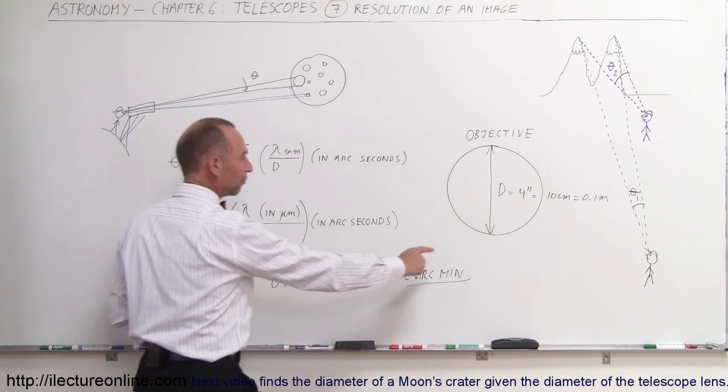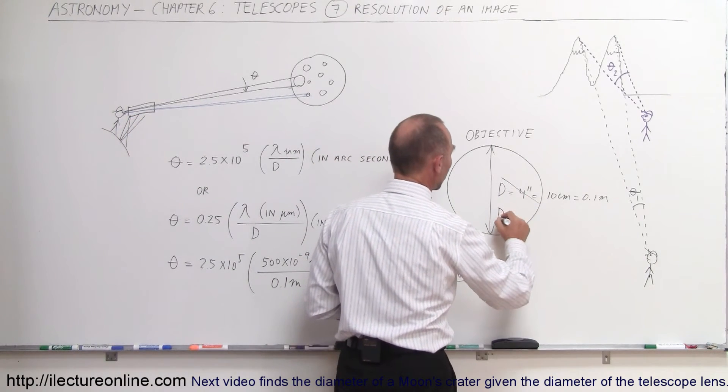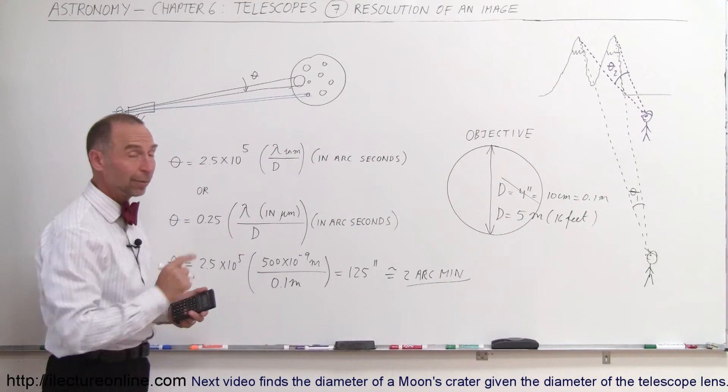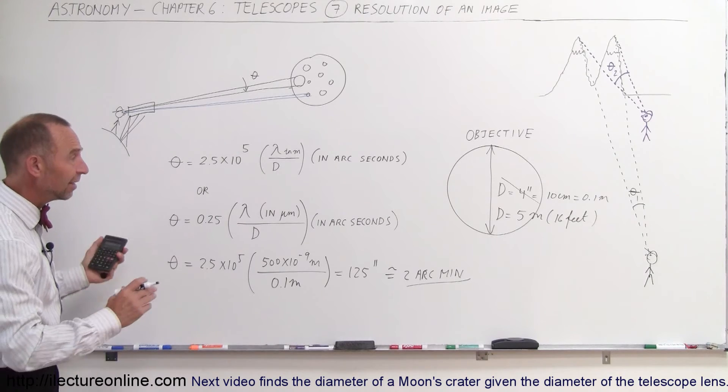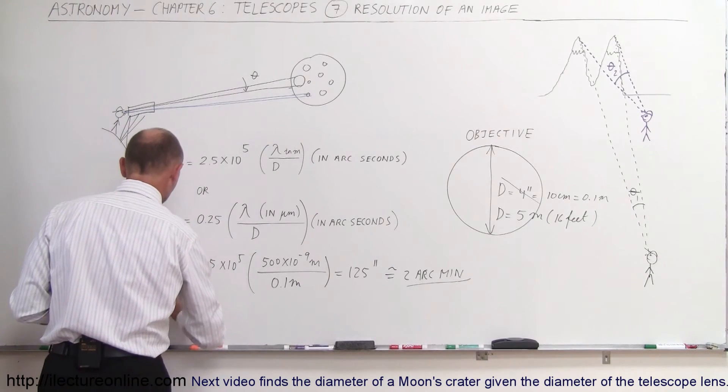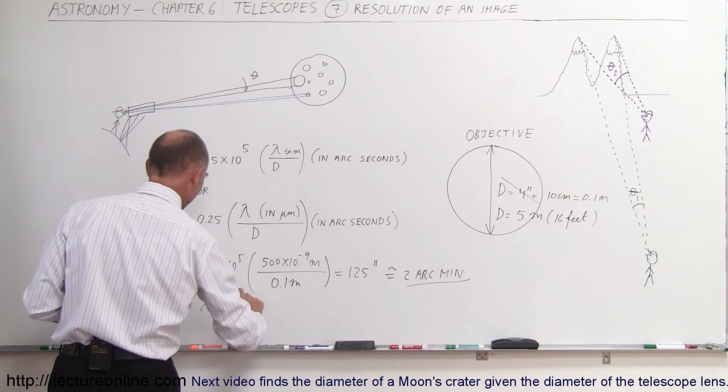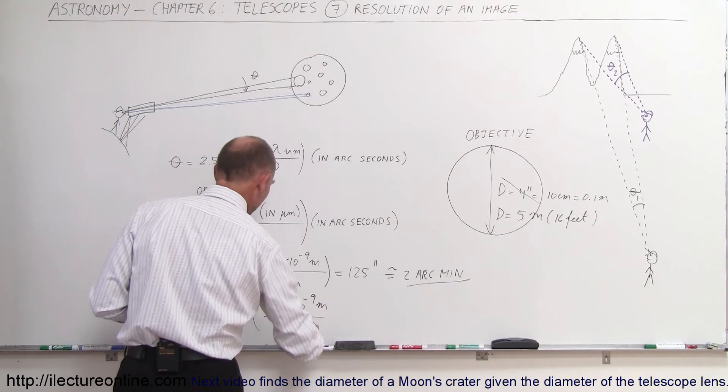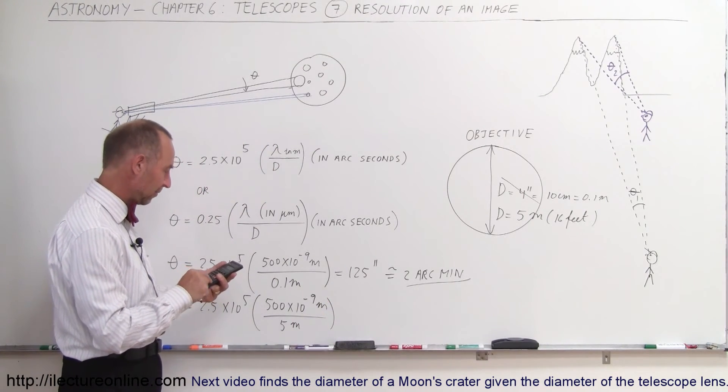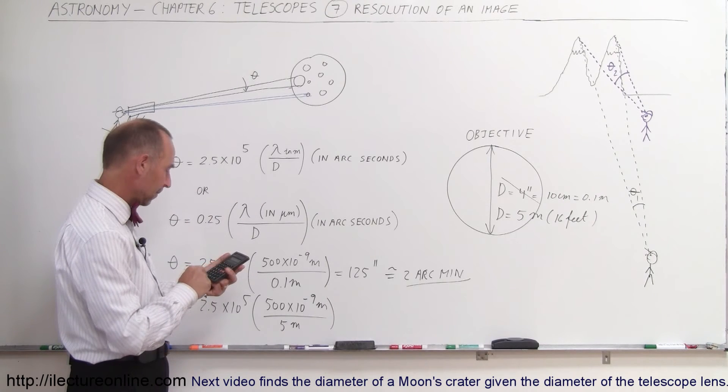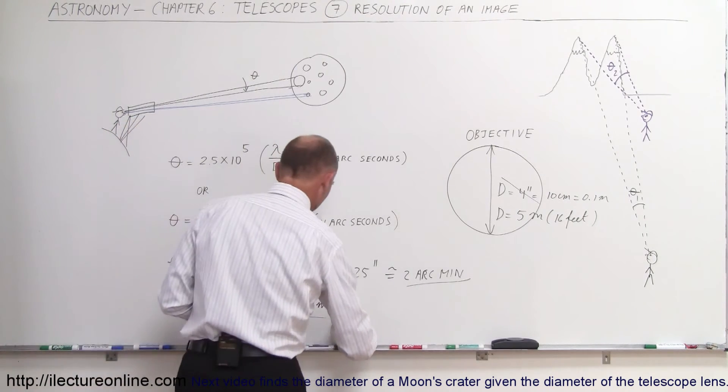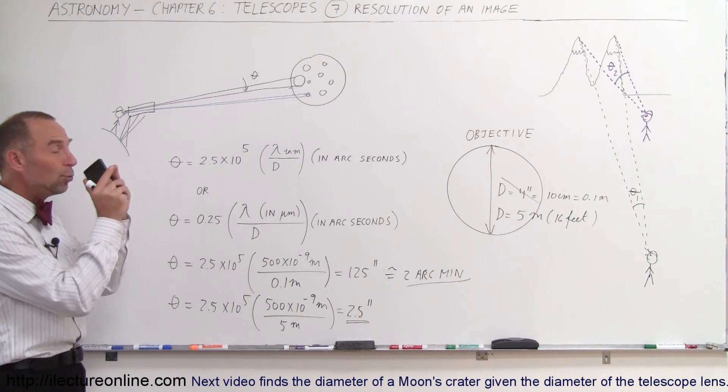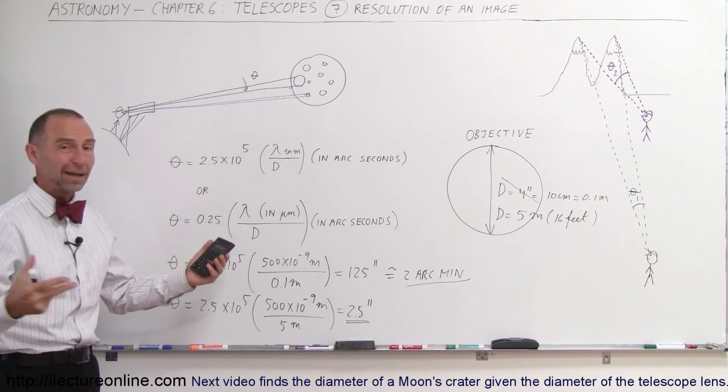But let's say instead of using a small telescope that is only 4 inches, let's say we use the Mount Palomar telescope, where the diameter is equal to 5 meters, which is about 16 feet. That used to be the biggest telescope in the world when it was built back in the 1940s here in California. And so let's see how small a crater we can see with a telescope like that. So theta is equal to 2.5 times 10 to the fifth, times the wavelength of visible light is the same, 10 to the minus 9 meters, divided by, now we have a 5 meter telescope. And 125 divided by 5 times 0.1 equals 2.5 arc seconds. Now that's a whole lot better. 2.5 arc seconds is a really small angle, meaning we see really small craters on the moon versus a small telescope that you can buy at the local store, that you can see only the very big craters on the moon in comparison.